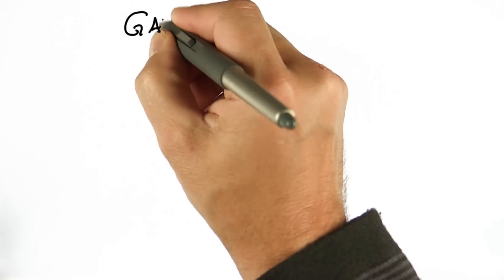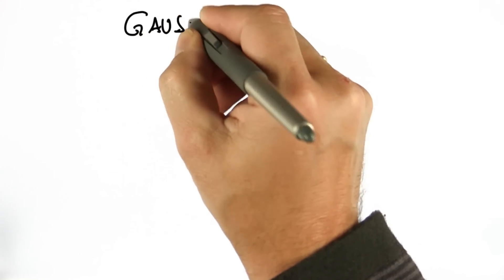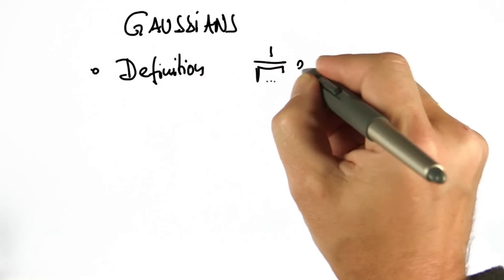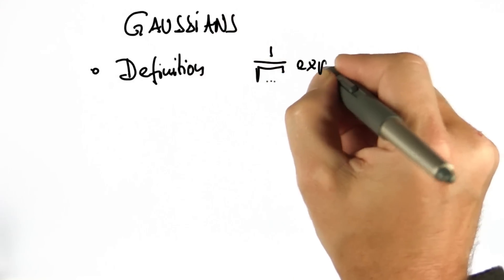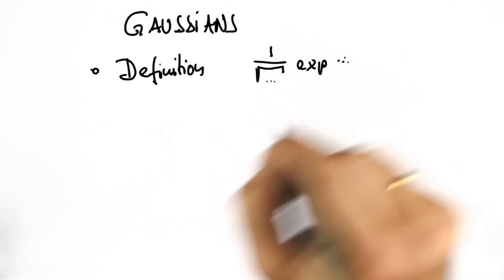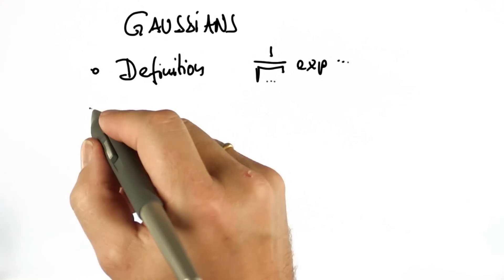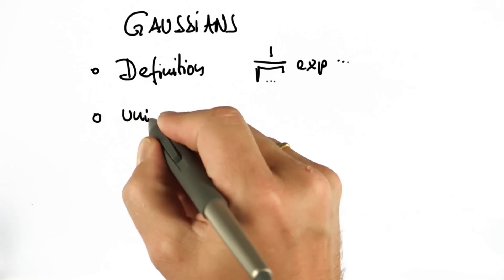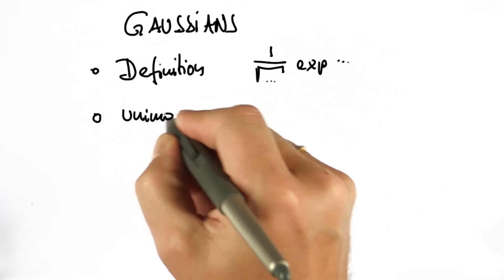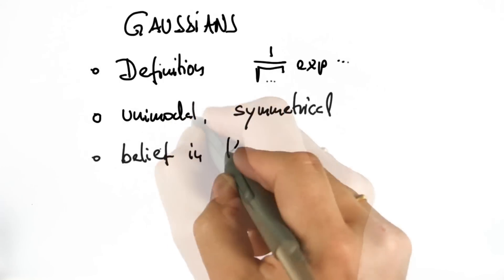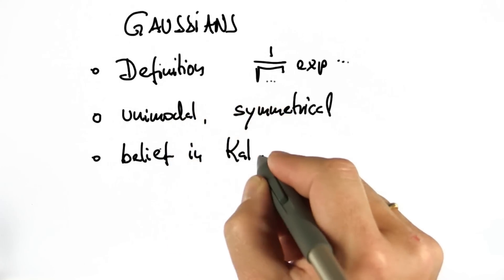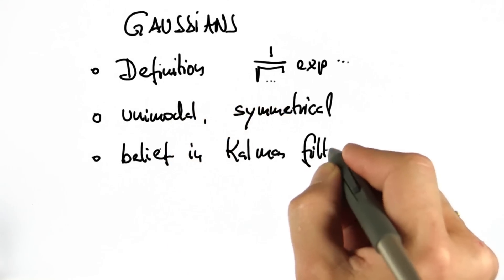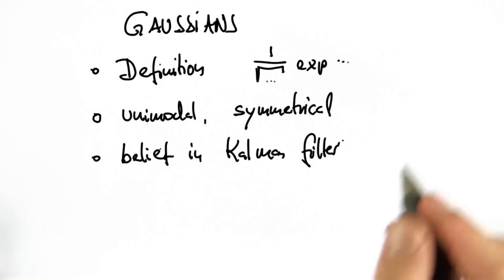So you learned something really important. You learned the definition of a Gaussian. You learned about the fact that these are unimodal distributions. They're also symmetrical. And you learned a little bit about how to use them as a belief in a probabilistic filter. So let's go and program a Gaussian.